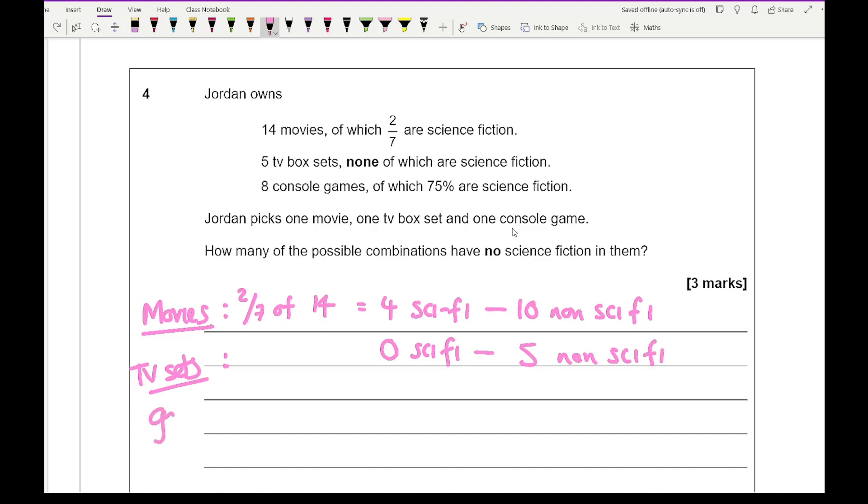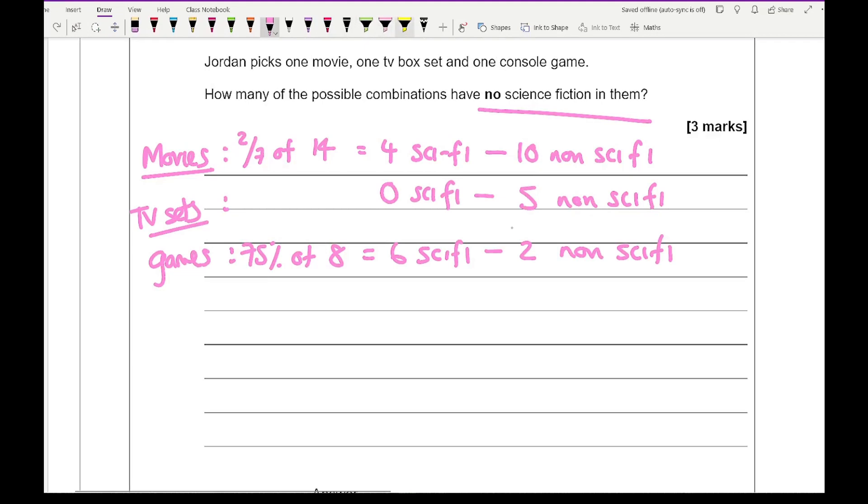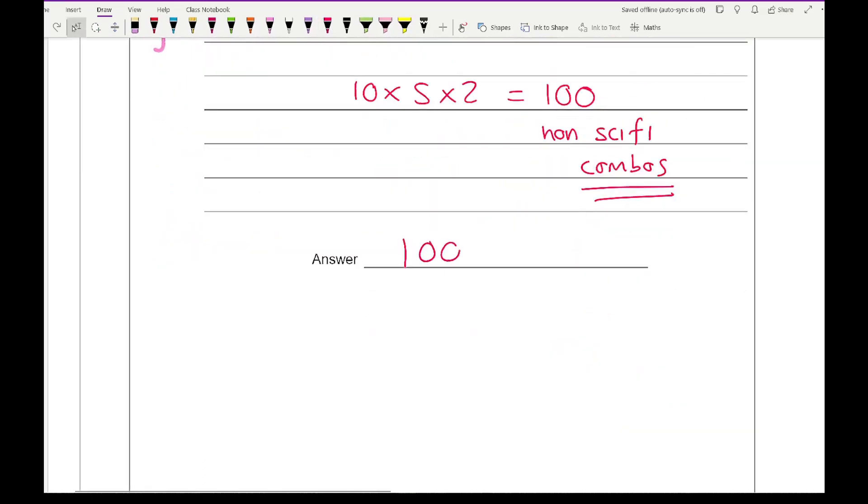Then for the games, we've got 75% of 8, which is 6, so 6 are sci-fi and that means that 2 are non sci-fi. Now the question is asking how many combinations are not sci-fi, so then I'm going to be using these numbers here, so it's going to be 10 times 5 times 2, which gives me an answer of 100 non sci-fi combos. So all that's left me to do is just write 100.